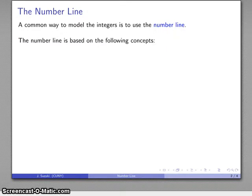So the number line itself is based on the following ideas. First of all, any cardinality can be represented by a set of units.